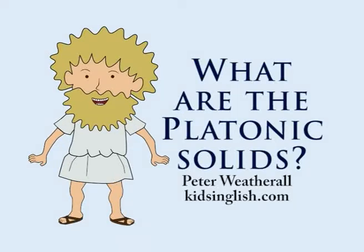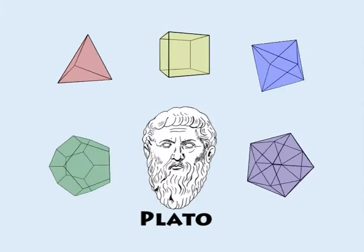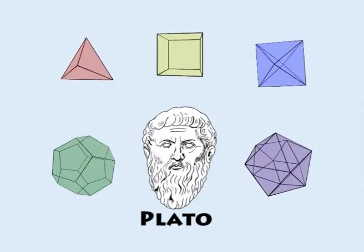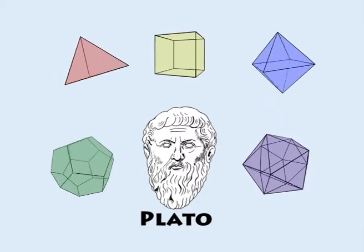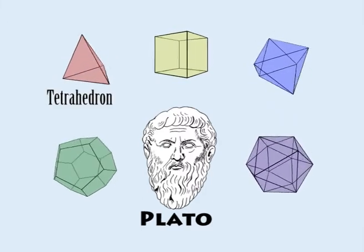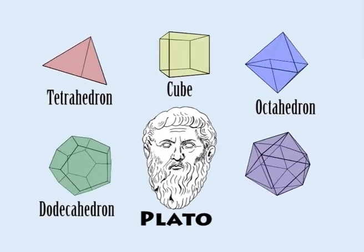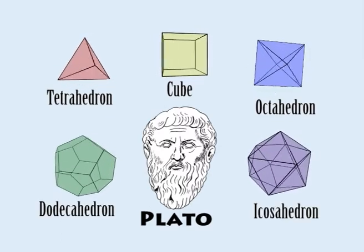What are the Platonic solids? The ancient Greek philosopher Plato described five special solids we know as the tetrahedron, the cube, the octahedron, the dodecahedron, and the icosahedron.